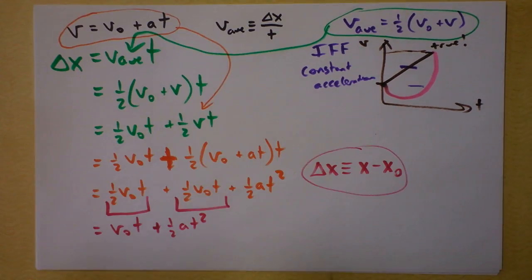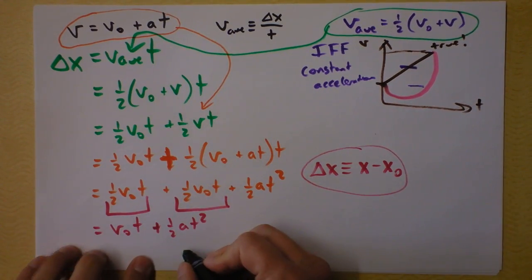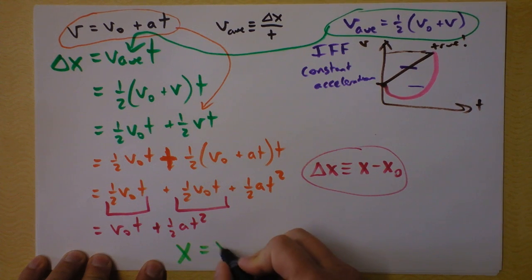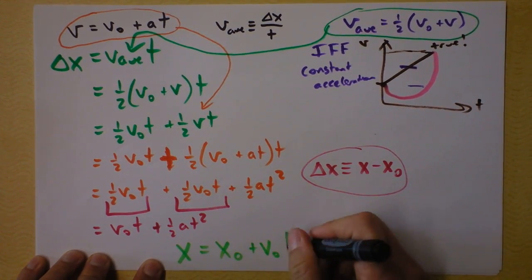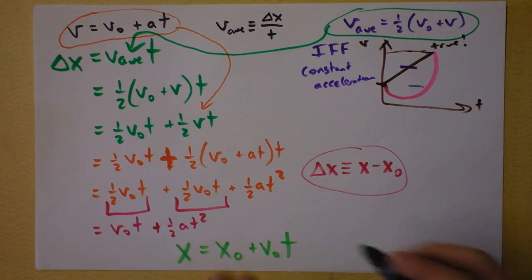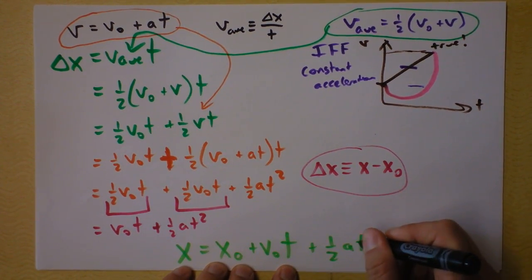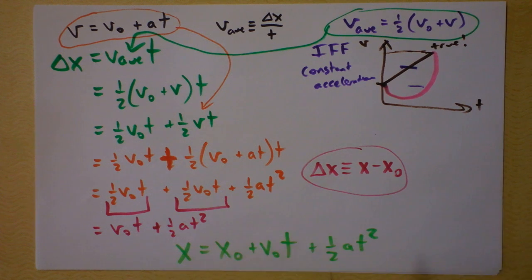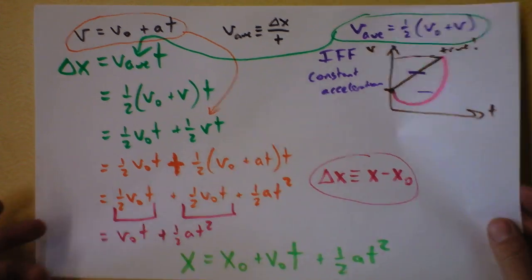Get ready. Here we go. I'm going to rearrange this: where you are is where you started, plus how your velocity has changed your position, plus how your acceleration has changed your position. You can also see this through calculus, and you can also see this graphically. Let's do that right now.